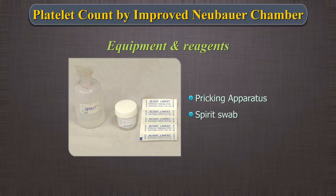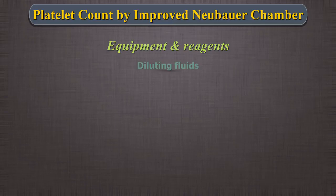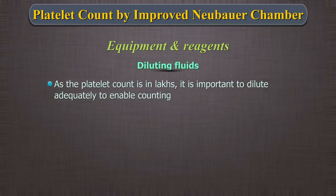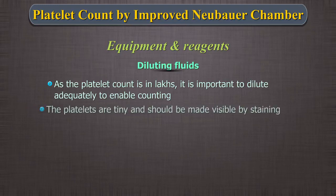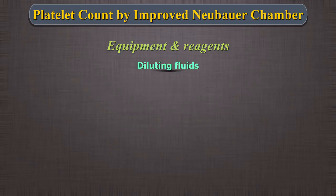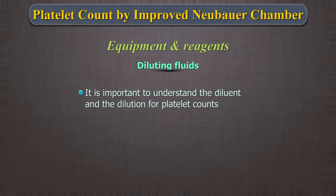5. Spirit swab. 6. Diluting fluids. As the platelet count is in lakhs, it is important to dilute it adequately to enable counting. The platelets are tiny and should be made visible by staining. The fluid also prevents platelet clumping. Thus, it is important to understand the diluent and the dilution for platelet counts.